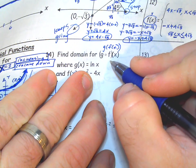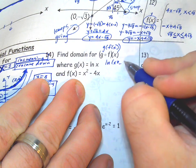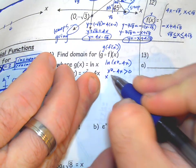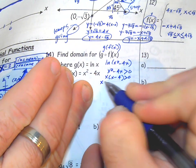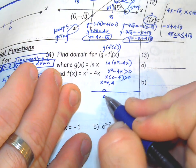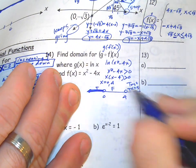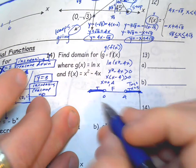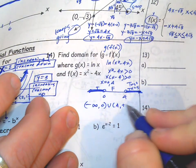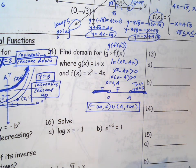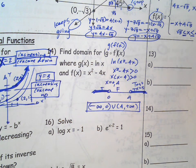Number 14: find the domain of this composite function — it's the same idea as before. Write the composite: natural log of (x² − 4x). The domain requires the inside to be positive, so factor: x(x − 4) > 0. Find roots, do a line check, test a value. True, false, true. In interval notation: (−∞, 0) ∪ (4, +∞).